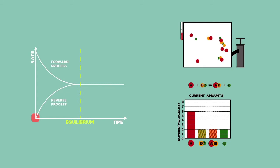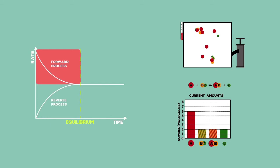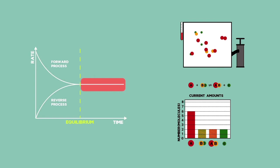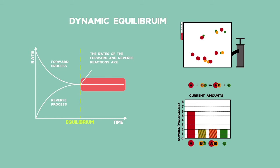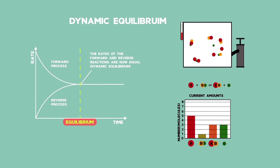When the rate of the forward reaction is equal to the rate of the reverse reaction, the graph shows a line parallel to the time axis. This is known as dynamic equilibrium. The amount of the substances stays the same at this point because the reaction making product is the same speed as the reaction making reactants.